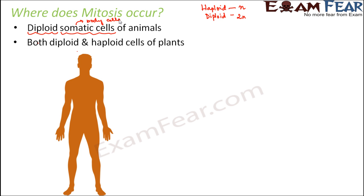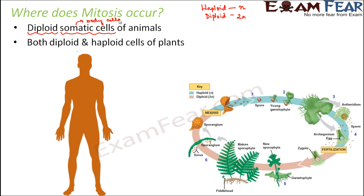However, mitosis occurs in both diploid and haploid cells of plants. In plants we can see mitosis in haploid cells as well. For example, in ferns, there is a phase called prothallus which is haploid — a haploid phase in the life cycle of fern where alternation of generation occurs, and here mitosis takes place in haploid cells. Similarly, in the sporangia of certain ascomycetes — that is fungi — mitosis also occurs in haploid cells. So mitosis is common for diploid cells in both animals and plants, but in plants it also occurs in haploid cells.